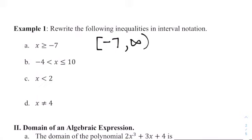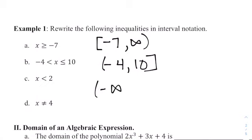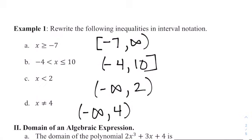For B, that's a bounded interval between negative 4 and 10. It includes 10 but not negative 4, so we put a parenthesis in front of negative 4 and a bracket after 10. Letter C is X is less than 2 — an unbounded interval going towards negative infinity, so we start with a parenthesis, negative infinity, up to 2 but not including 2, using a parenthesis. For D, X is not equal to 4: that's negative infinity to 4 with a parenthesis after 4, then 4 to infinity.